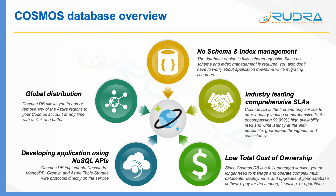Secondly, it is a globally distributed database. Cosmos DB allows you to add and remove any of the Azure regions to your Cosmos account at any time with a click of a button. This is particularly important when your users are geographically spread, and you need to deliver data with very low latency. So if your database is in Australia and a European or US user is trying to access the data, there will be a lot of latency due to distance. Instead, you just add regions for global distribution and replication.